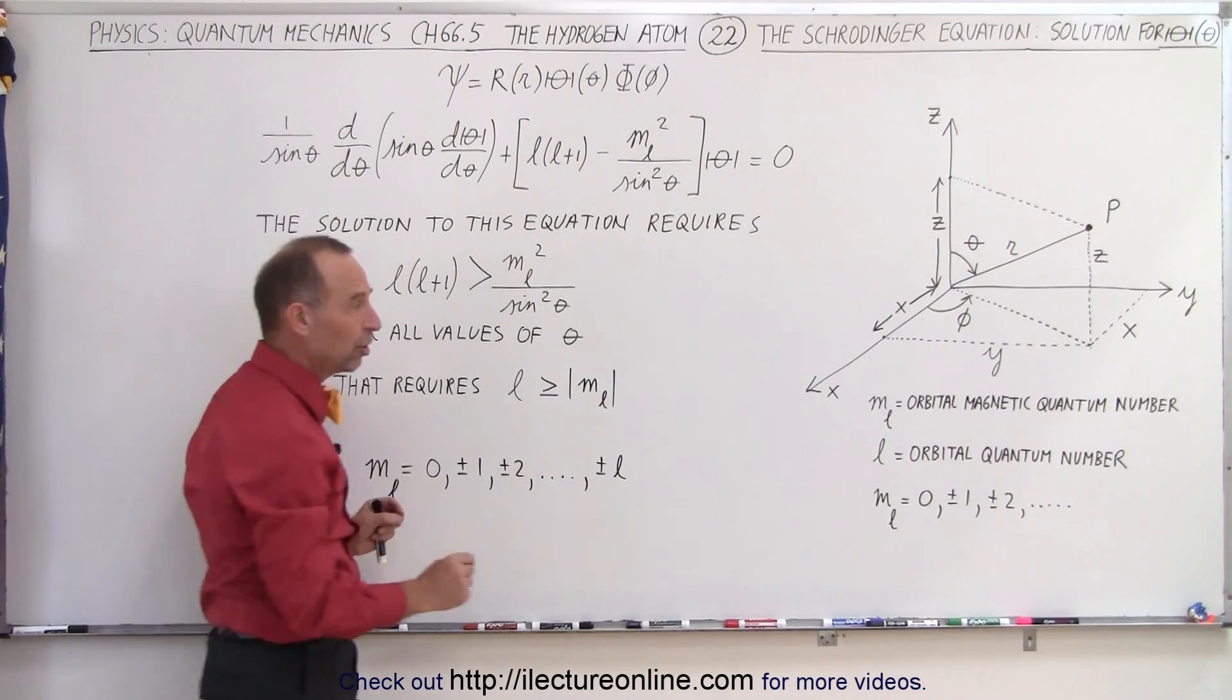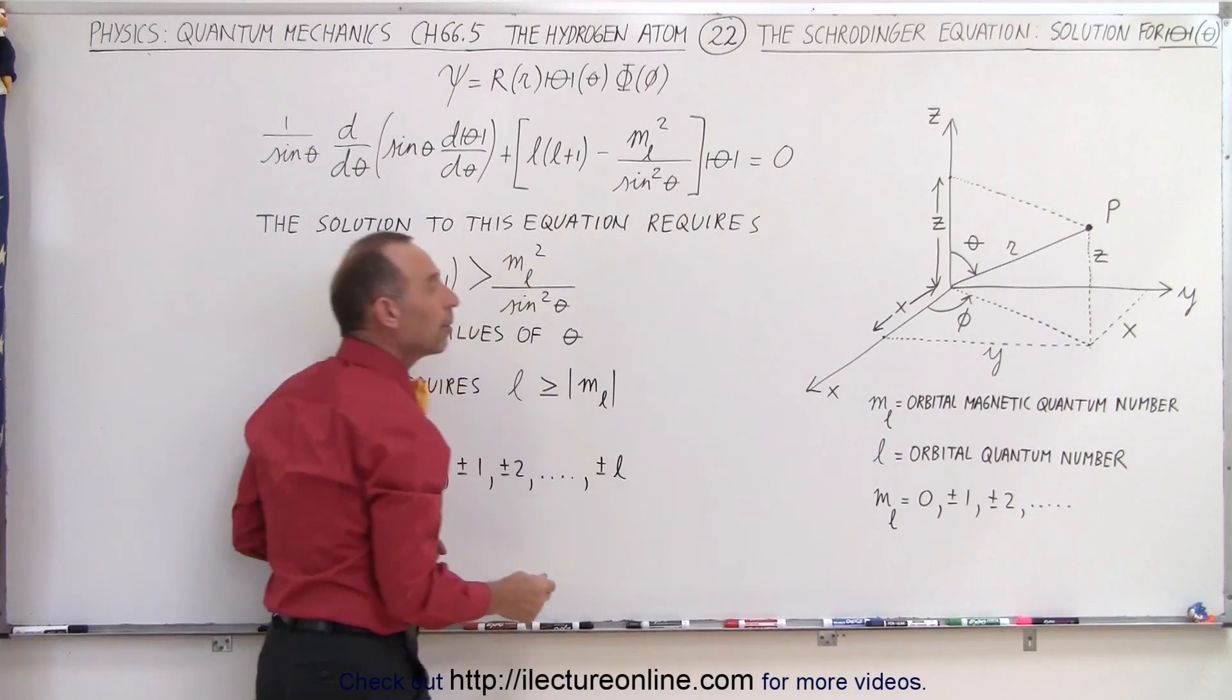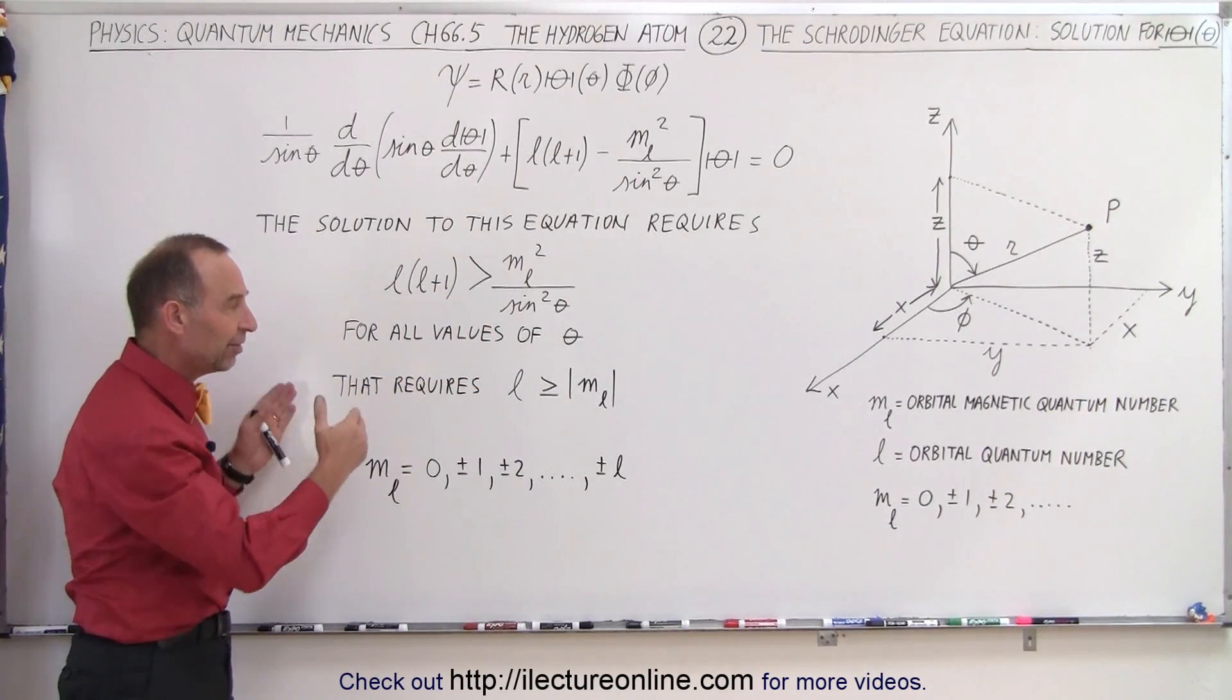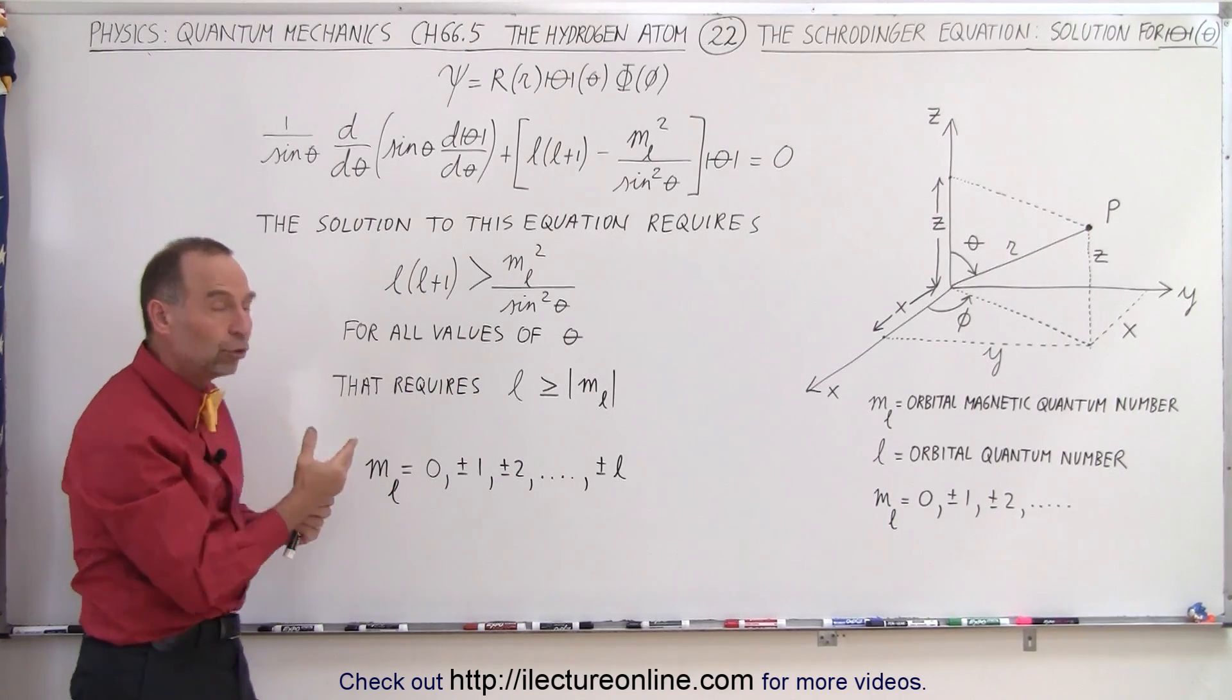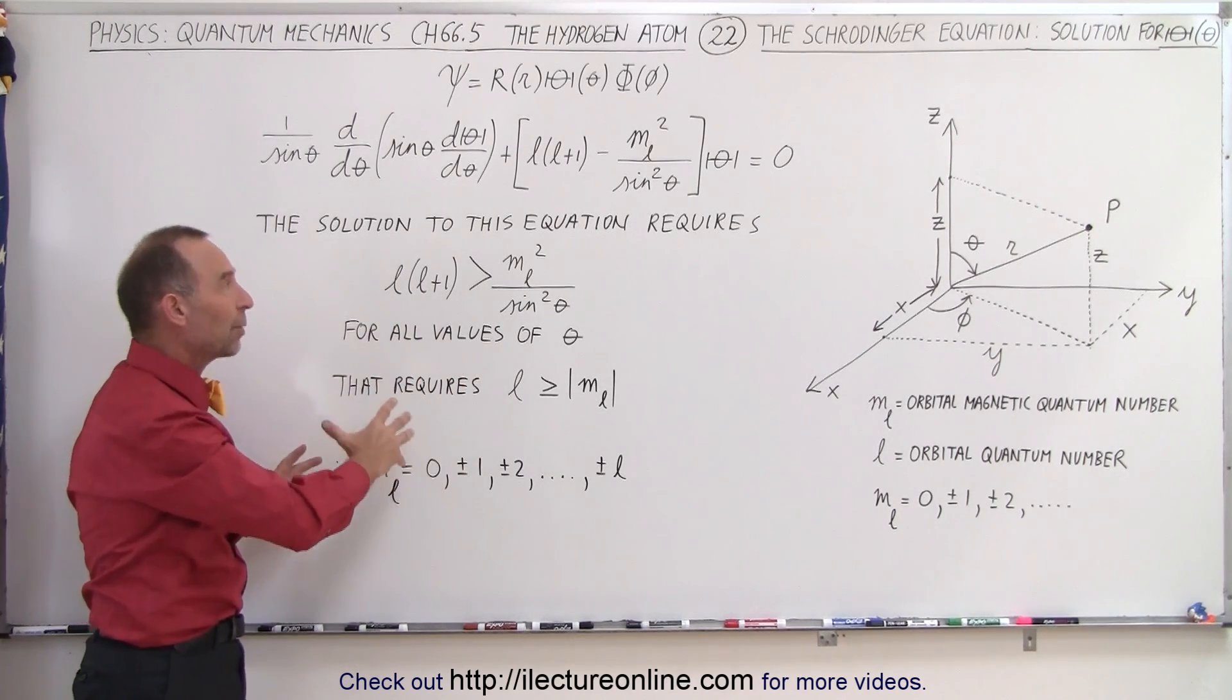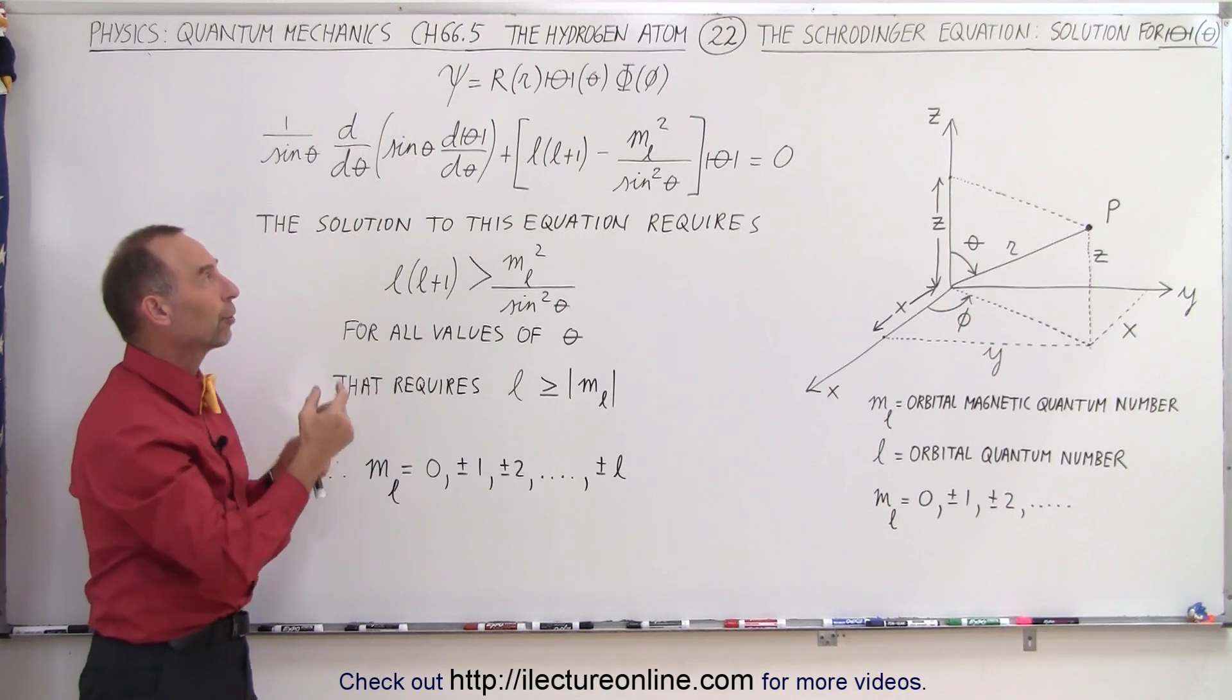And so there's a relationship between the orbital quantum number and the orbital magnetic quantum number that m sub l can never be greater than l. And so at least that gives us some additional insight into what the limitations are to the wave function of the electron in the hydrogen atom.